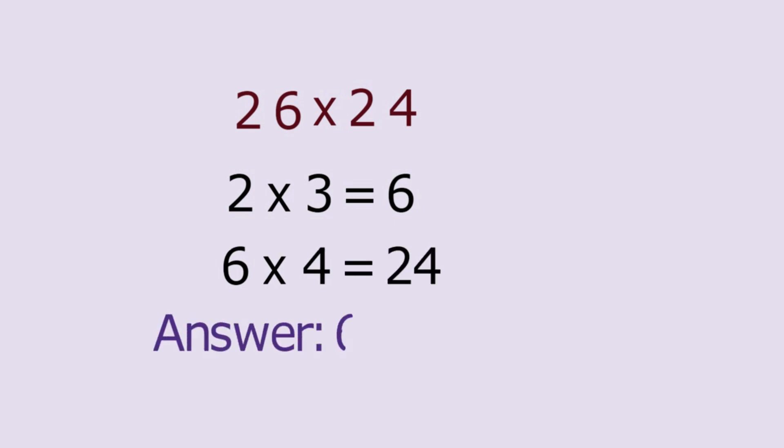Now, it's your turn. Try 26 x 24. Since 2 x 3 is 6 and 6 x 4 is 24, the answer is 624. Easy? Remember that to use this method, the first digit has to be the same and the last digit must sum to 10.